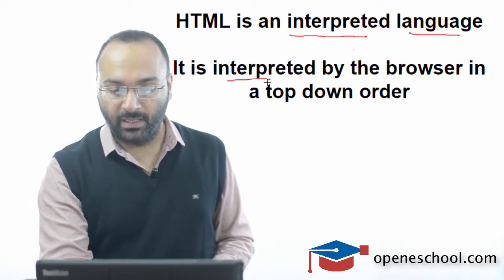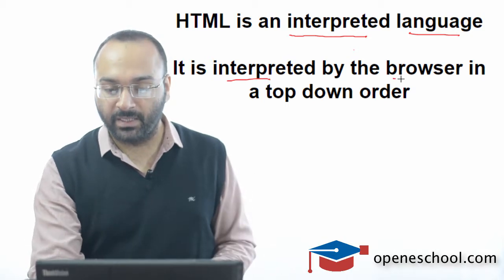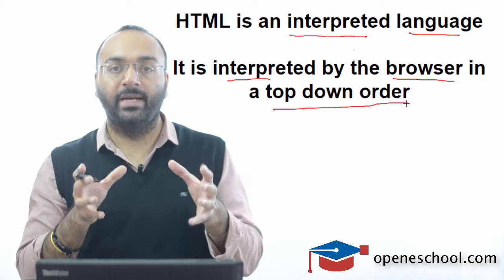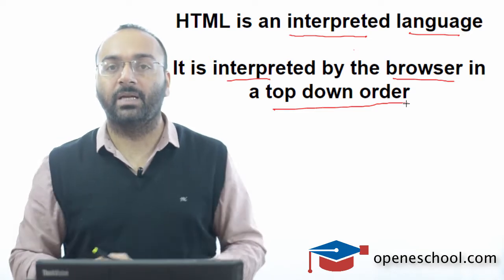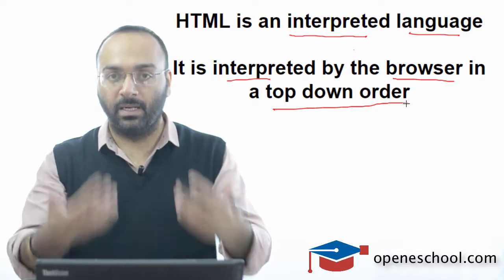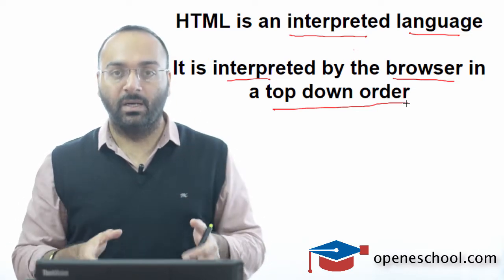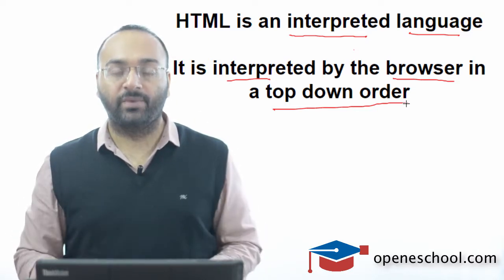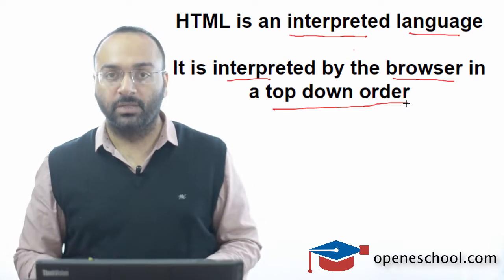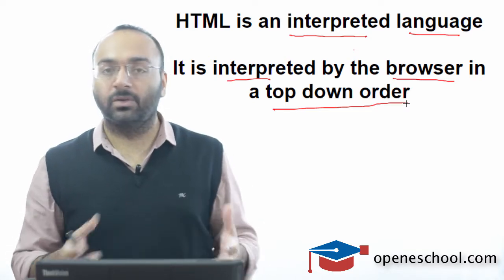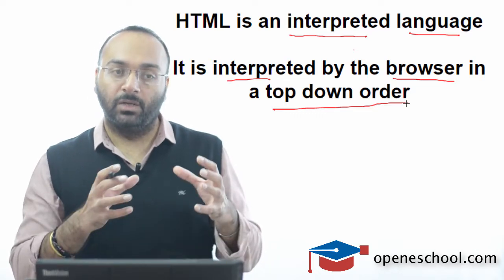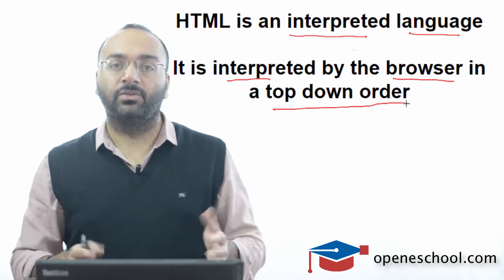HTML is interpreted by the browser in a top-down order. You need a browser to understand the HTML that you have written, and the output of the web page you have created is shown to you by the browser. So HTML is an interpreted language — it is not a compiled language, there is no compiler for HTML. You just open your web page in a browser and you see the output.